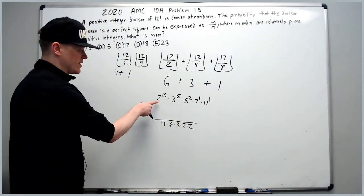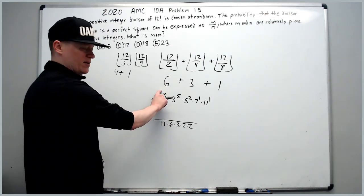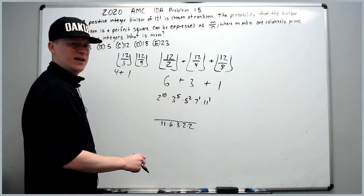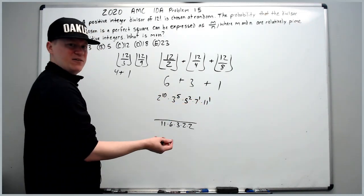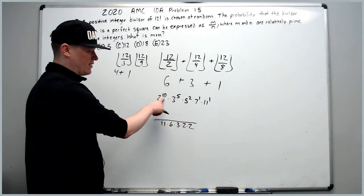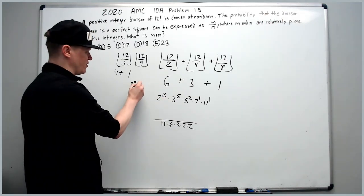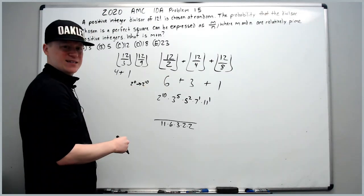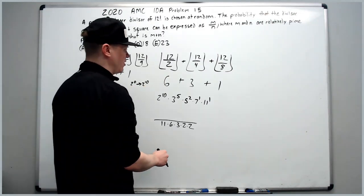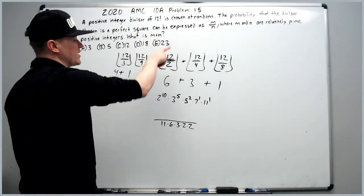So there are 11 choices for the power of 2 (from 2^0 to 2^10, that's 11 choices), and similarly for each prime, giving the total number of divisors. Next, we need the probability the divisor is a perfect square, so we need to count how many perfect square divisors there are.